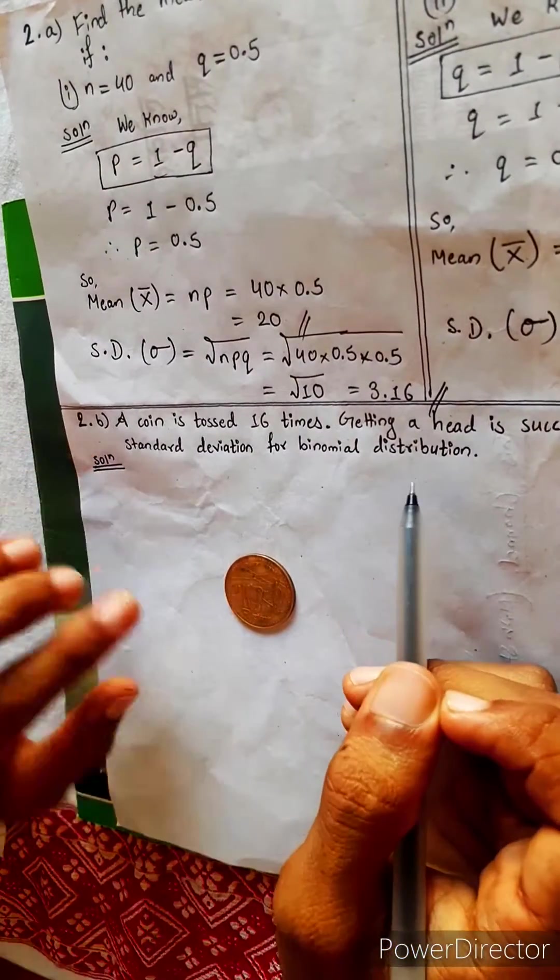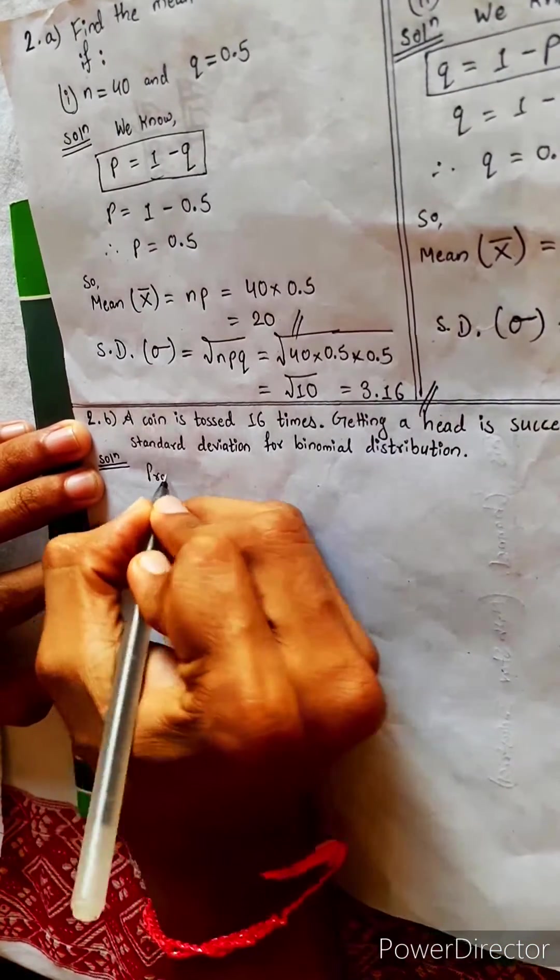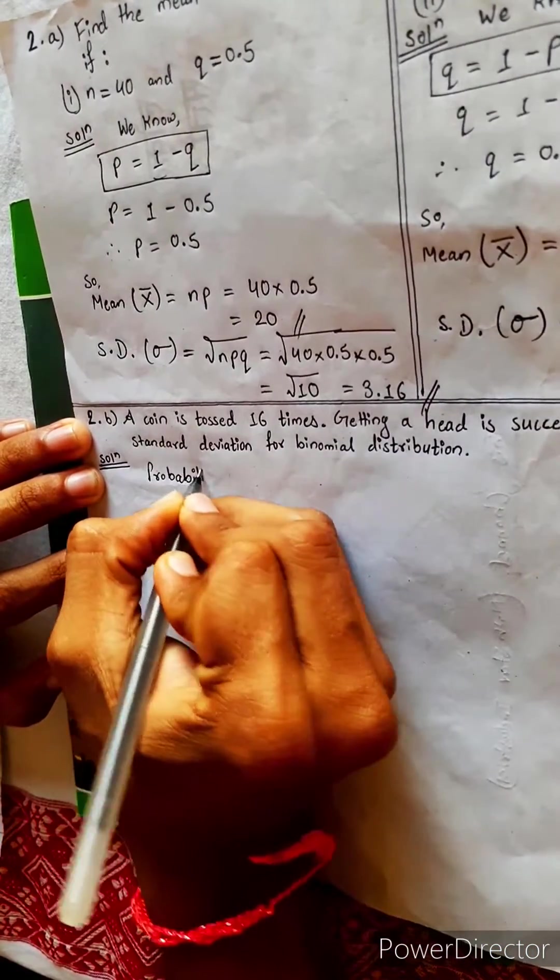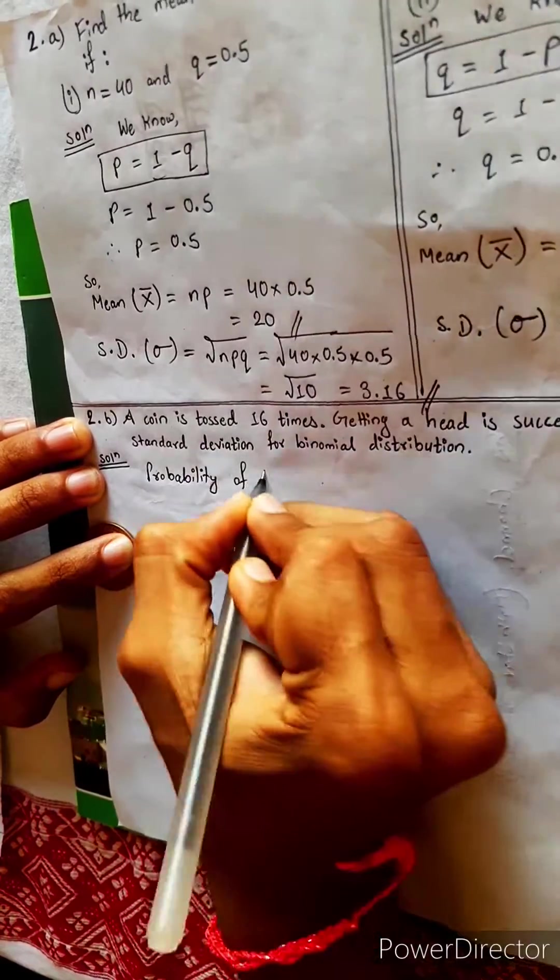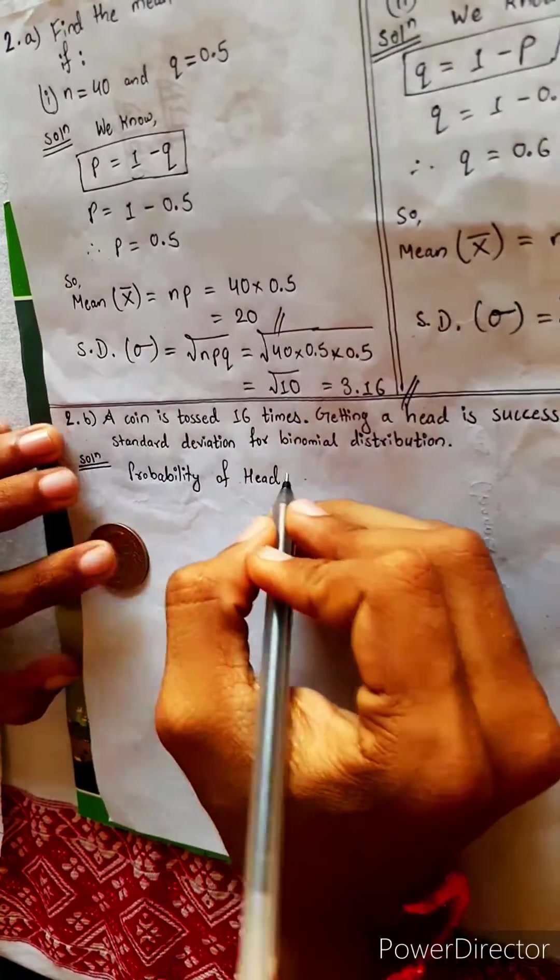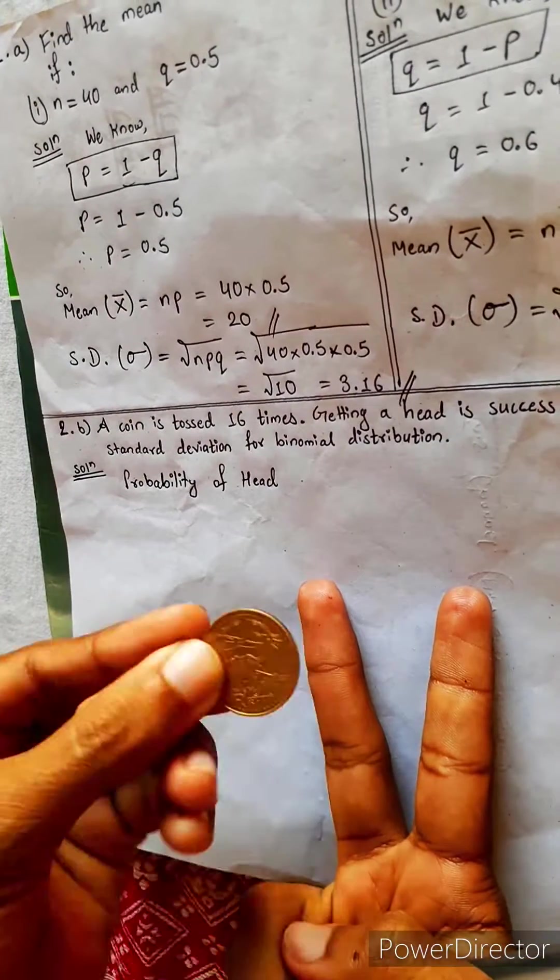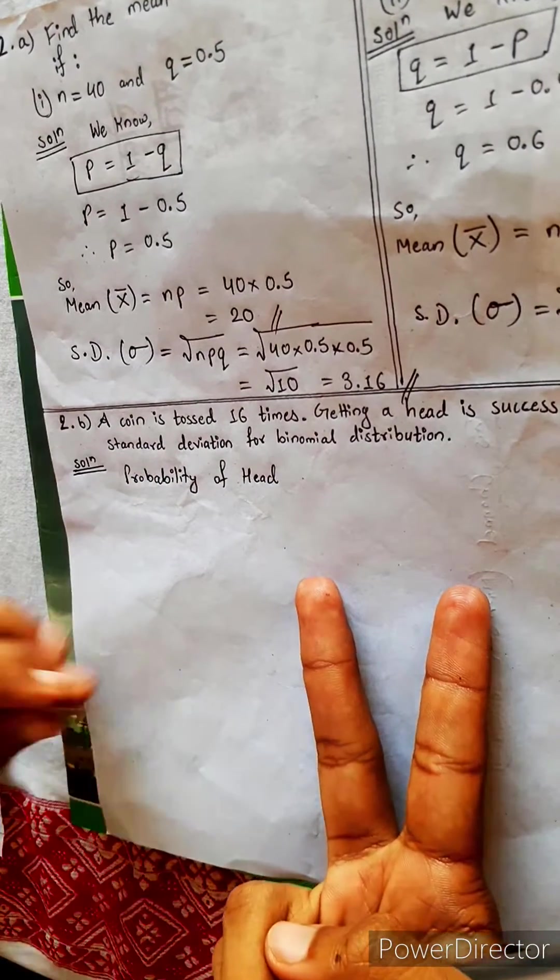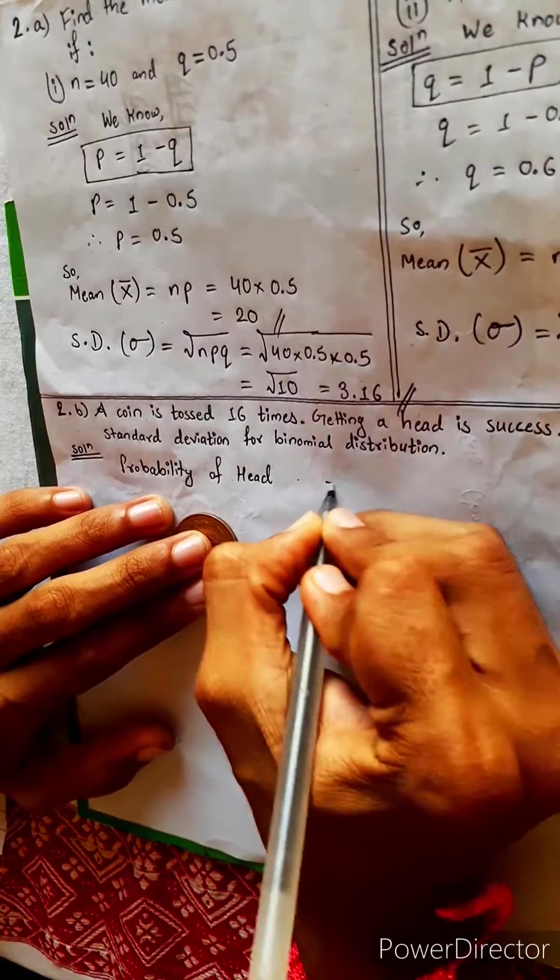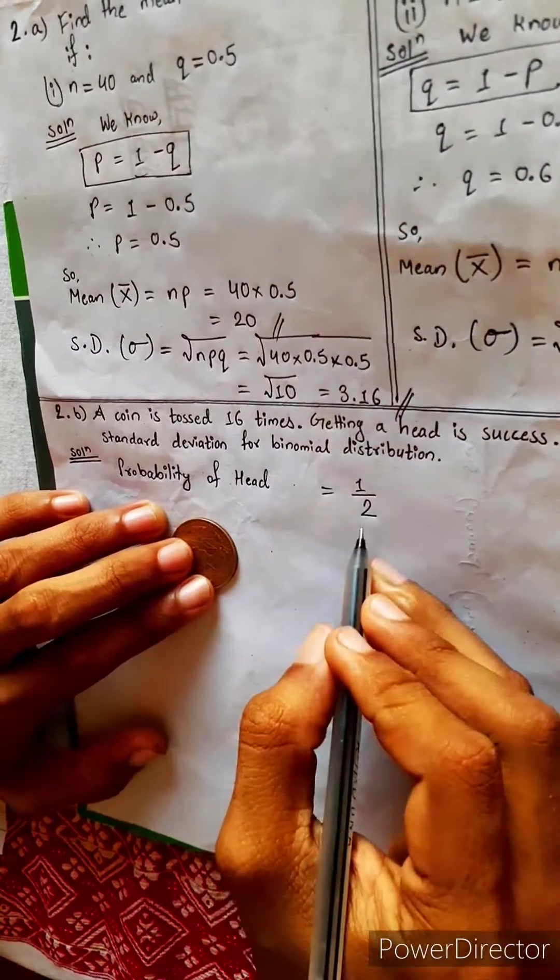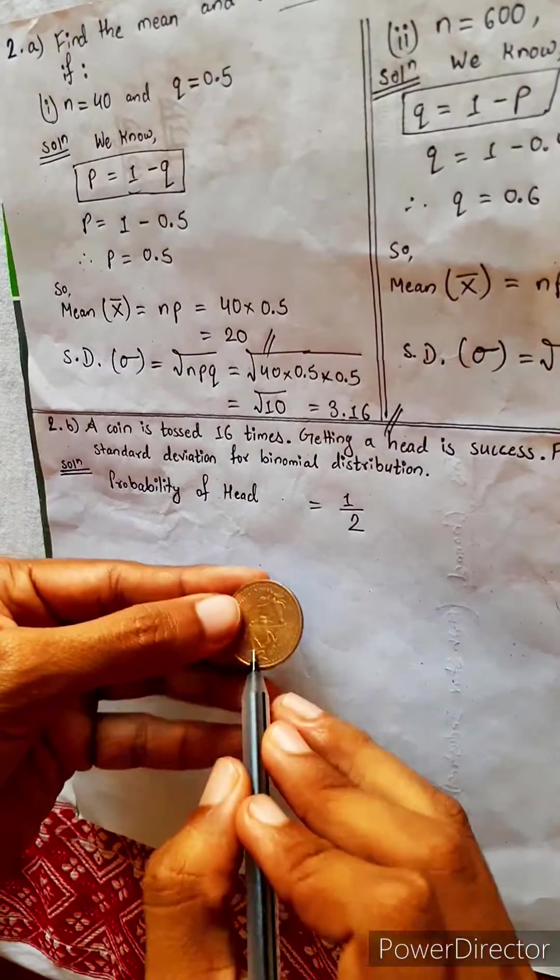Probability of head: There are two cases, one is head and another is tail. So probability of head will be 1/2. One is favorable (head) divided by total which is two, so 1/2.